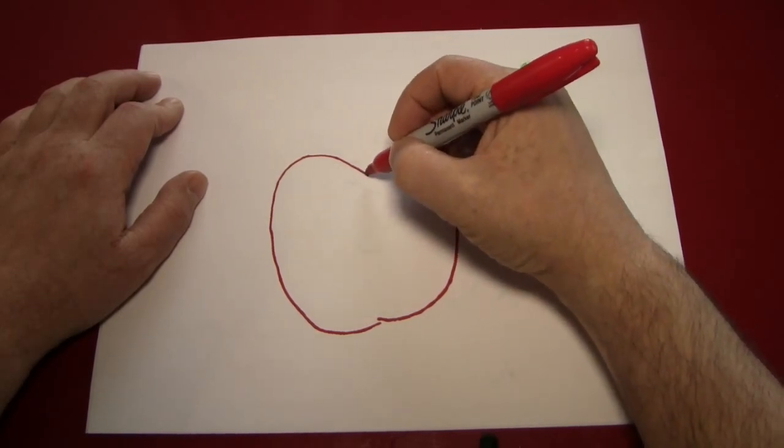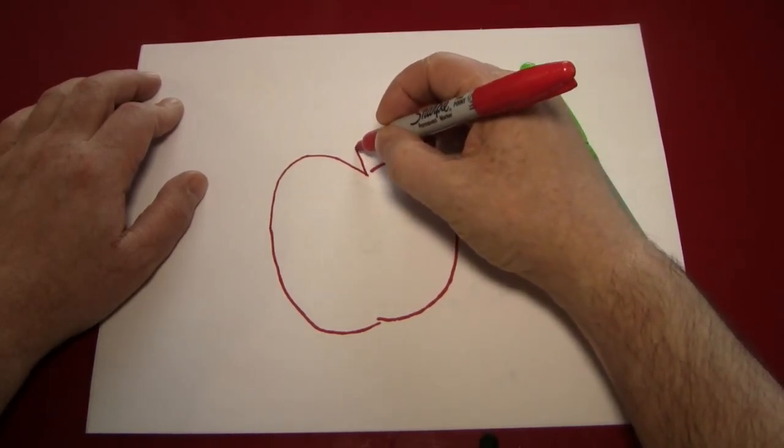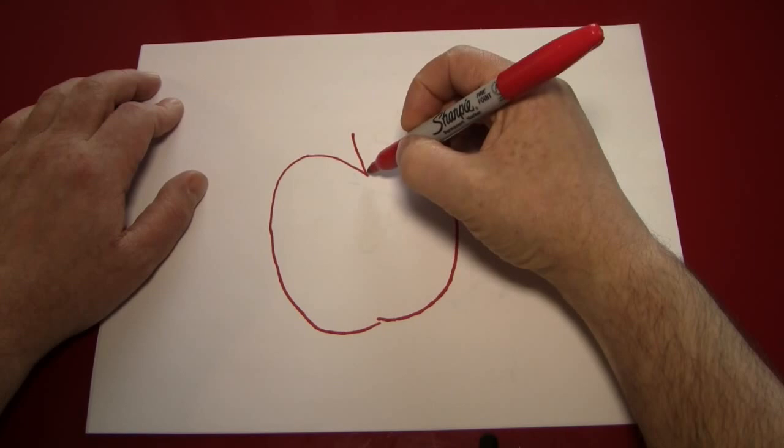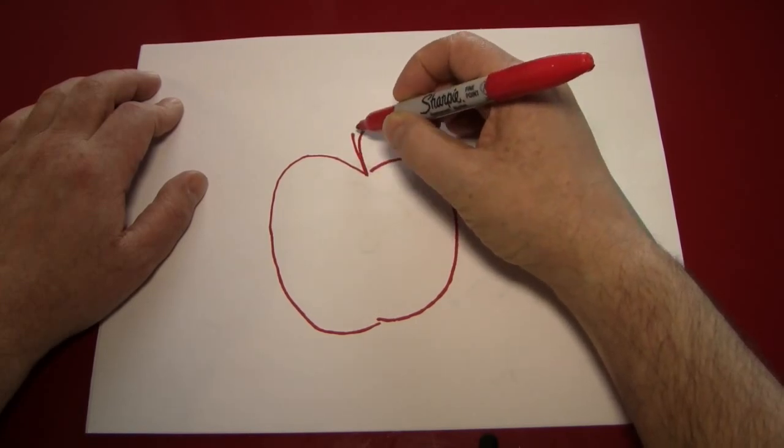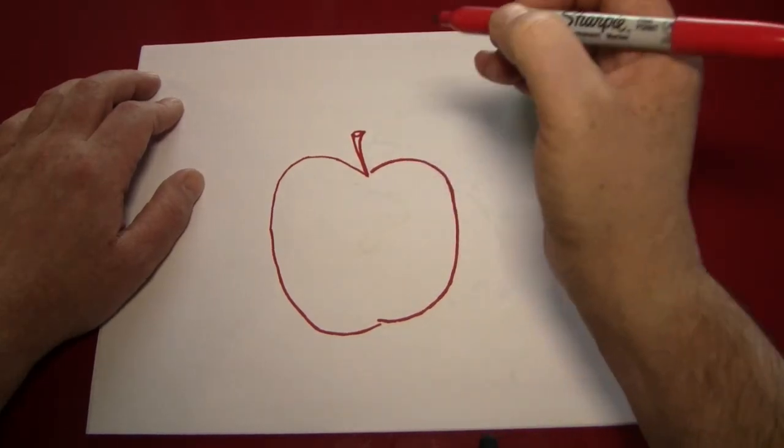Next, we're going to put a little stem on the top of the apple. Just make it get skinny and get a little fat at the end like that. You can even put a little circle on top for dimension.